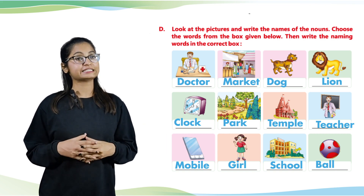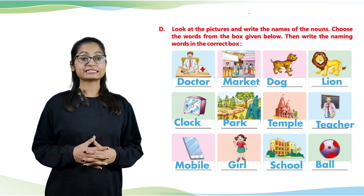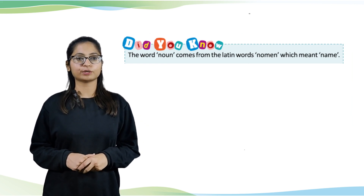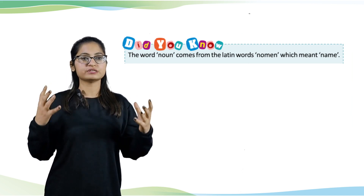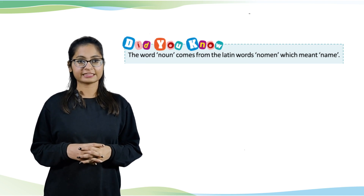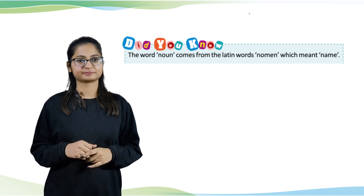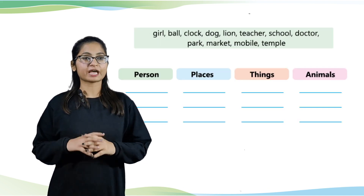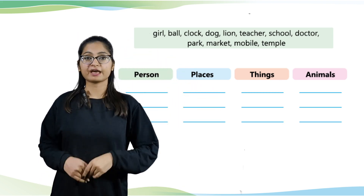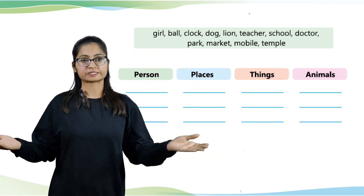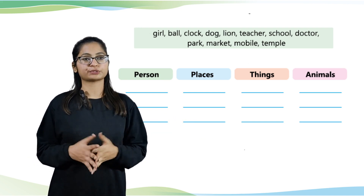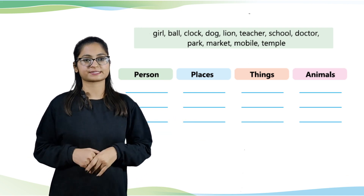Okay students, let's learn a new thing. Did you know the word 'noun' comes from the Latin word 'nomen', which means 'name'? Based on the pictures and names given, you have four boxes — person, places, things, and animals — and you have to put them accordingly in the boxes.